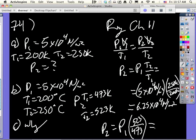So, why can't you just divide 200 by 250 for part B? Because it's not in Kelvin. You cannot use Celsius when you have a ratio.